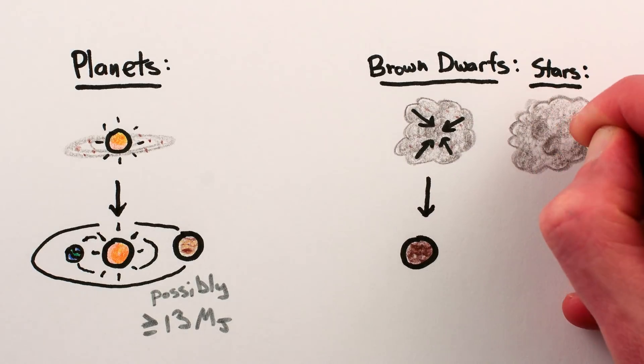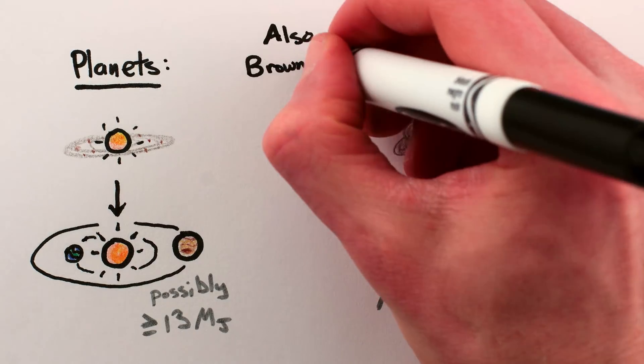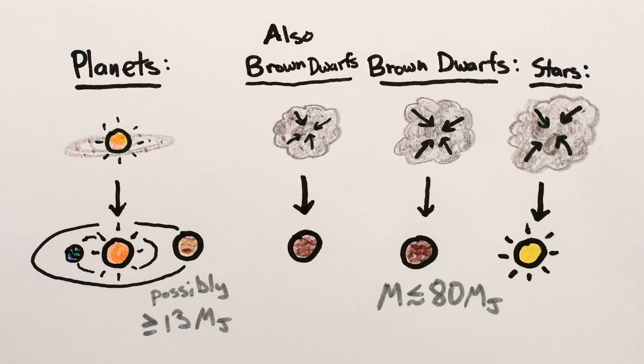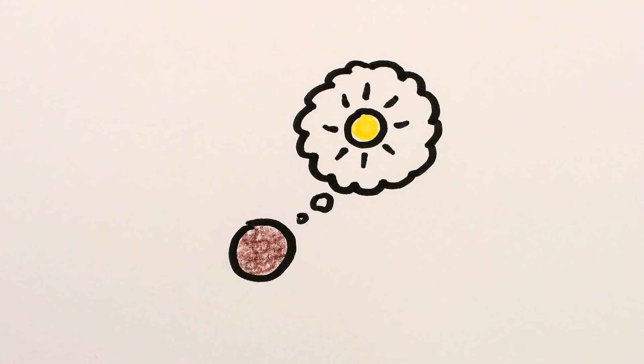They started off the same way stars do by gravitationally collapsing from a cloud of dust, but failed to capture enough mass to burn hydrogen. In the end, it doesn't matter how badly they failed. That is, it doesn't matter if they also can't burn deuterium. What matters is that they aspired to be stars, and fell short.